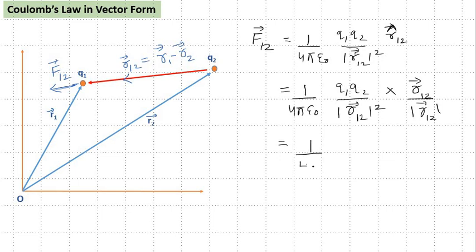Writing it again: 1 by 4 pi epsilon 0 q1 q2 upon r12 vector, and this is written as r12 vector upon its magnitude. But here it is square and here it is r12 vector magnitude single time. So this will be 1 by 4 pi epsilon 0 q1 q2 upon r12 vector whole cube, and this is r1 minus r2 vector. So this is our F12 force in its vector form.